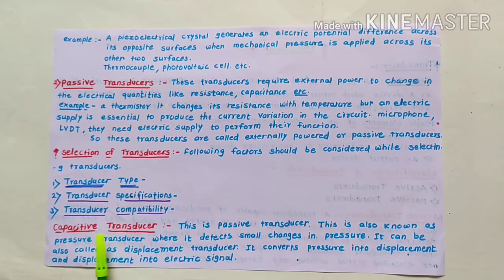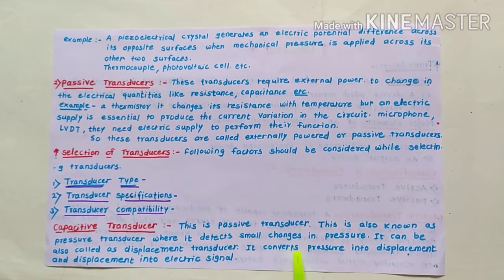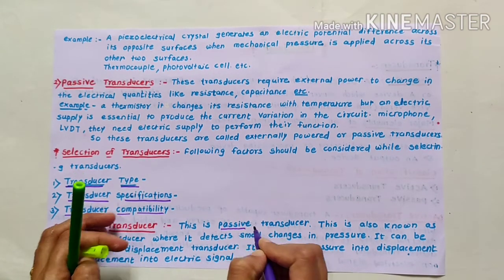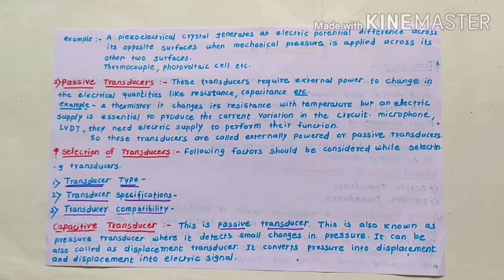Now let us begin with different types of transducers. The first is the capacitive transducer. This is a passive type of transducer, also known as a pressure transducer, where it detects small changes in pressure. It can also be called a displacement transducer because it converts pressure into displacement and displacement into an electrical signal.